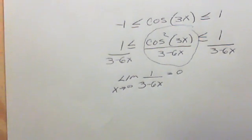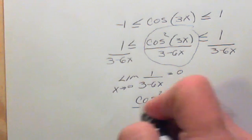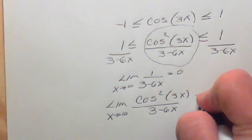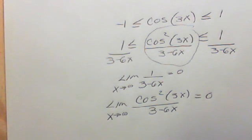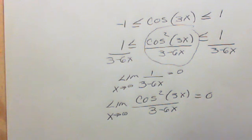So the limit of cosine squared of 3x over (3 minus 6x) as x approaches infinity must equal zero. There are three examples — I hope you find this useful. The sandwich theorem is not that difficult. Just break it down into little parts, then slowly start adding the parts back in through multiplication, addition, subtraction, whatever. Once you've got the middle exactly like you want it, solve the limit for the left side and the right side, see if you get the same value, and that's your answer. Best of luck — talk to you next time.